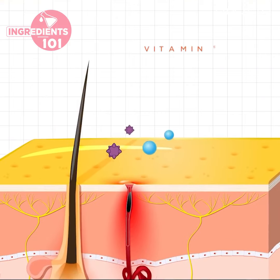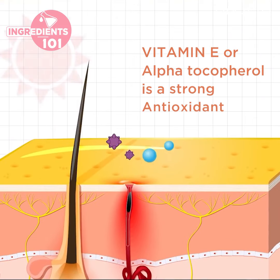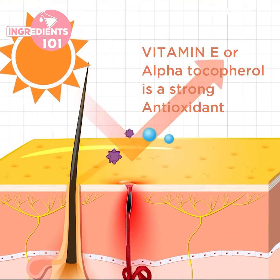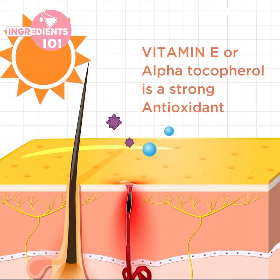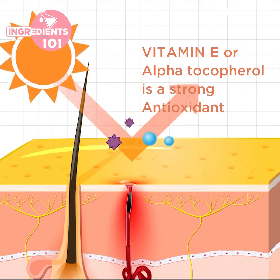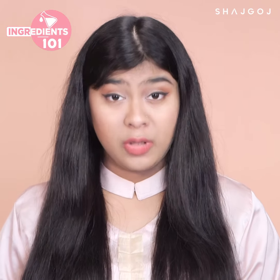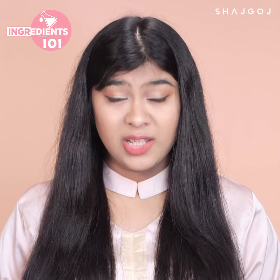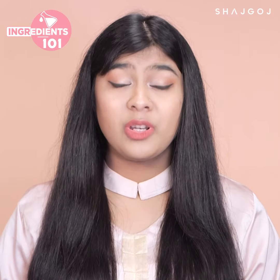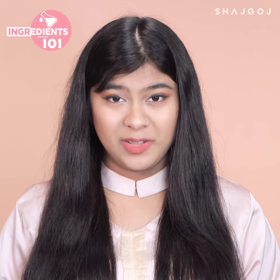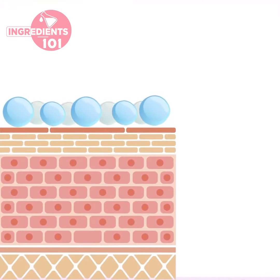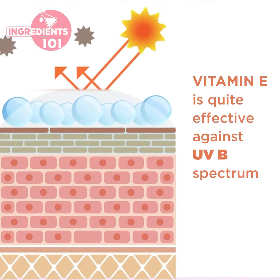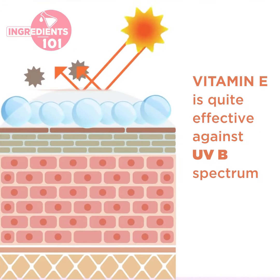Vitamin E, or alpha-tocopherol, is a strong antioxidant. It helps protect your skin. Vitamin E's protection against the UVB spectrum is very beneficial for preventing sun damage.